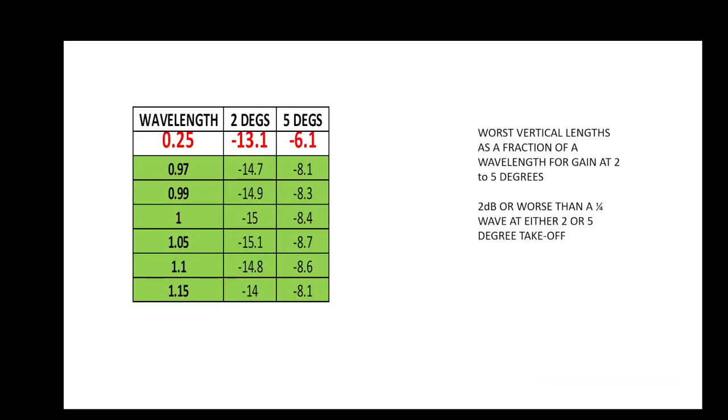Now, there is a sort of dead zone, quite the skip zone if you like, in terms of the length of a vertical, in terms of performance, certainly against the quarter wave. And it's from about 0.97 through to about 1.15 of a wavelength, we are at least two dB worse than a quarter wave, which you can see up here, at either or both of two or five degrees off the horizon.